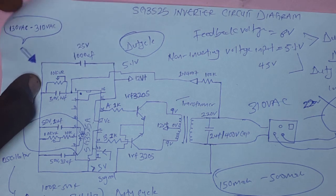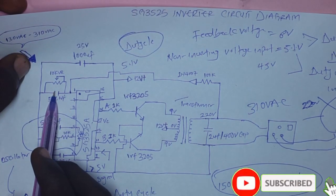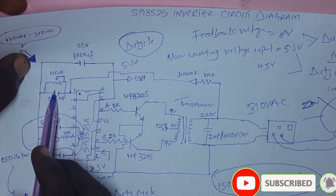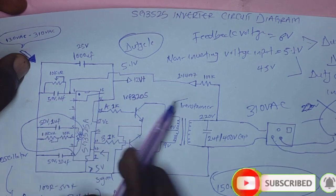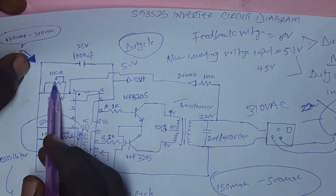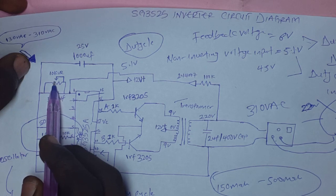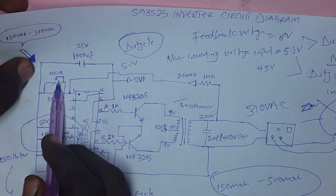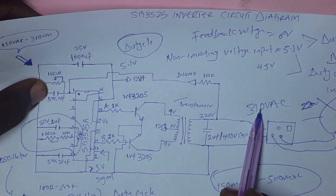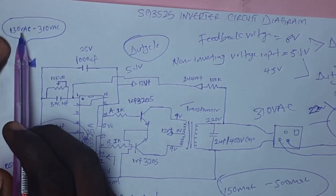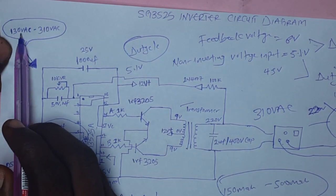When you change the voltage, the feedback voltage by turning this resistor, this potentiometer resistor, it will let you adjust the 310 volts all the way down to 110 or 130 volts.